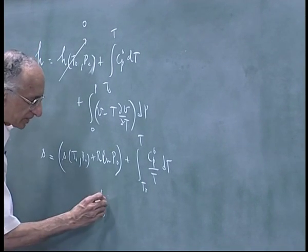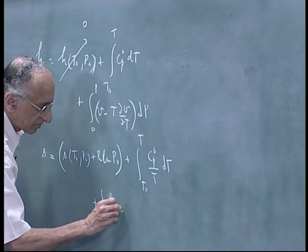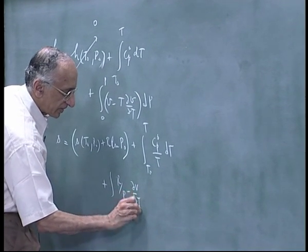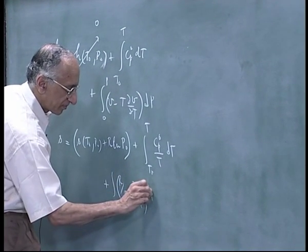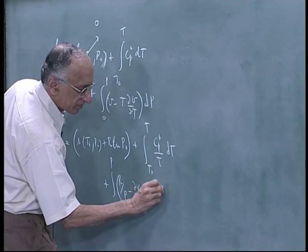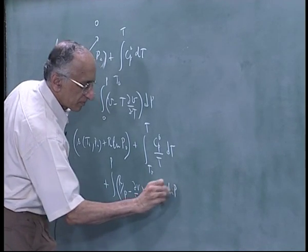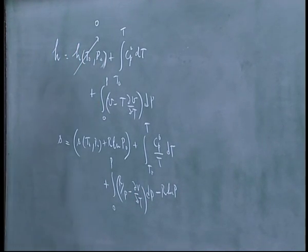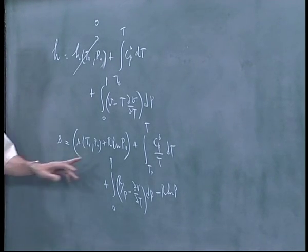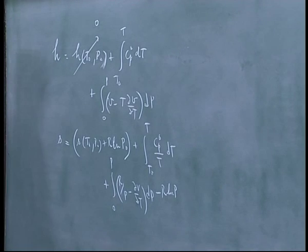So it is R by P minus ∂V/∂T, and there is a minus R·ln(P). There may be a plus R·ln(P0) minus R·ln(P) — is that okay?